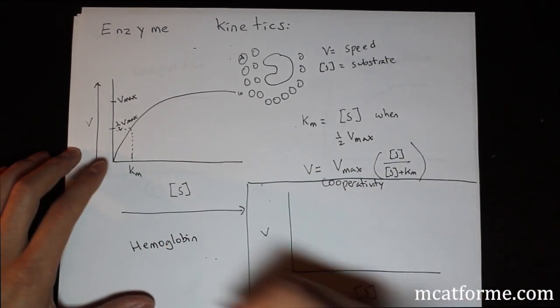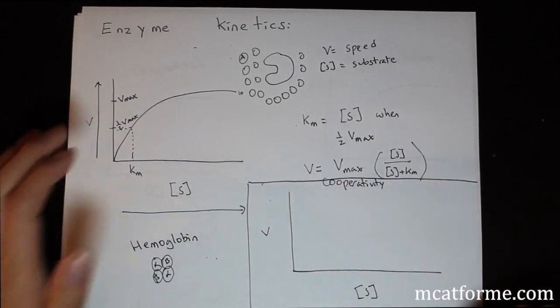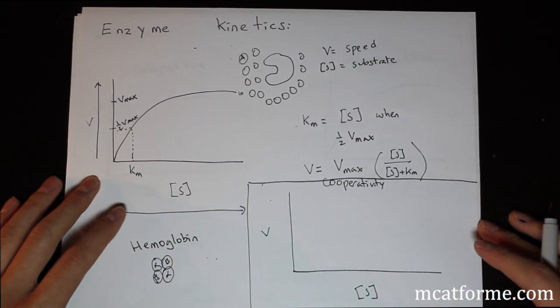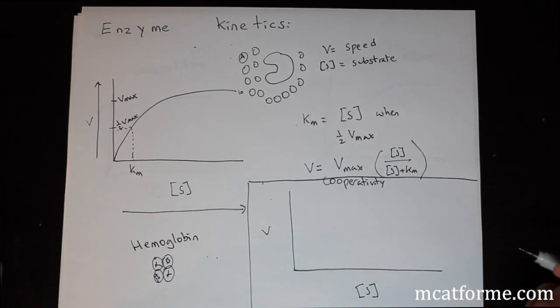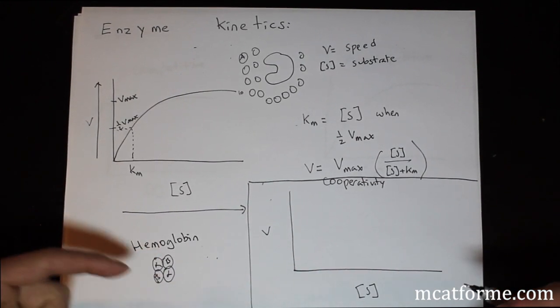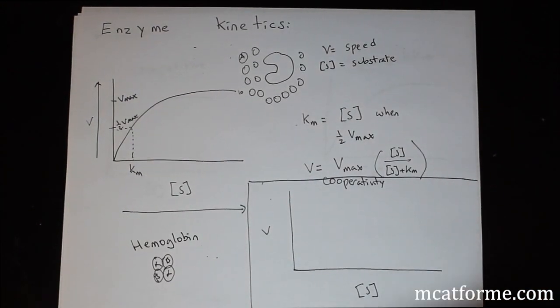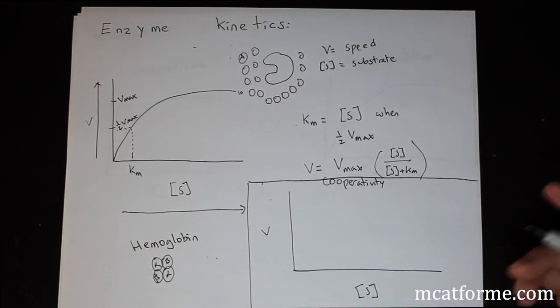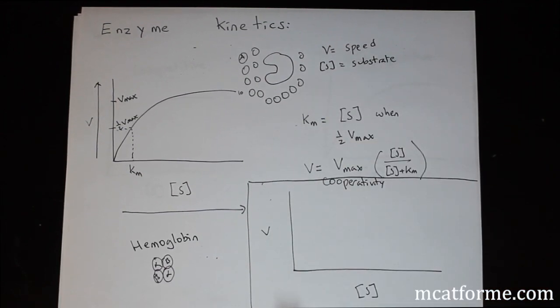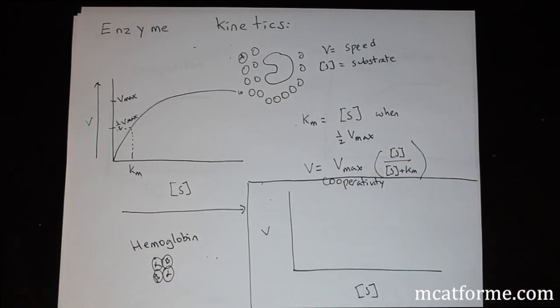One example would be something like hemoglobin. We know that there's four subunits, two alpha and two beta. Hemoglobin carries oxygen in our blood. So the chances of one hemoglobin molecule grabbing some oxygen, if one hemoglobin molecule grabs some oxygen, all the rest will grab it at a much faster rate. The chance of one guy getting it is somewhat low, but if one guy gets it, the second guy will have a much higher chance of getting it, and the third guy will have an even higher chance, fourth one, and so on and so forth.